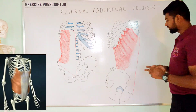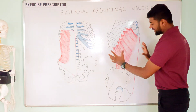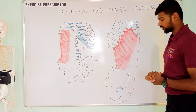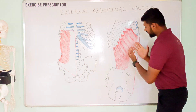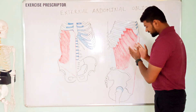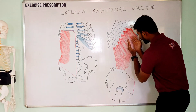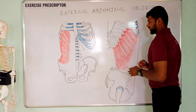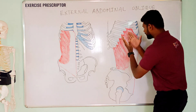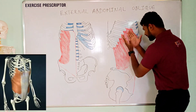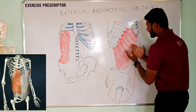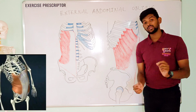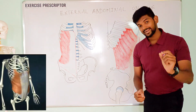The second movement: looking at the lateral view of the external abdominal oblique, the fibers run in a somewhat vertical direction. If you pull these muscle fibers in this direction, it creates the movement of lateral flexion of the trunk.